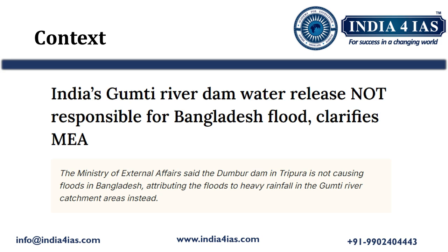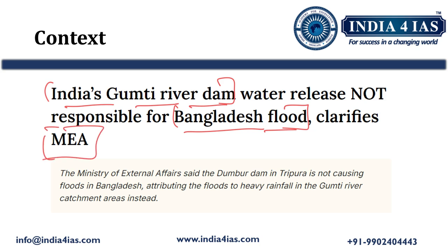Gumti River — Bangladesh flood. There are claims that India released water from the Gumti River Dam causing the flood. However, the Indian Ministry of External Affairs responded that India's Gumti River Dam water is not responsible for the flood in Bangladesh. The flood in Bangladesh is because of heavy rainfall in the Gumti River catchment area, and that is the major reason, not India releasing water from the dam.